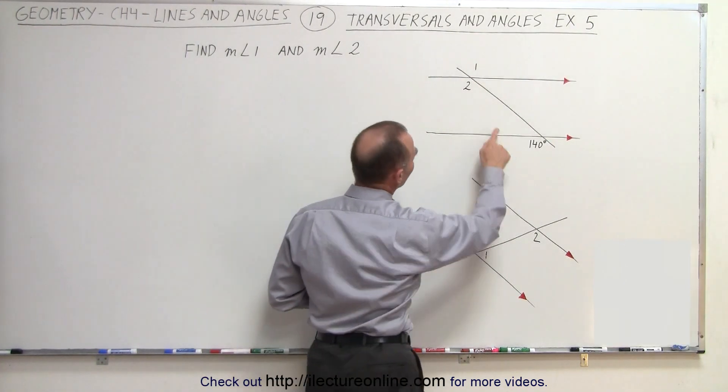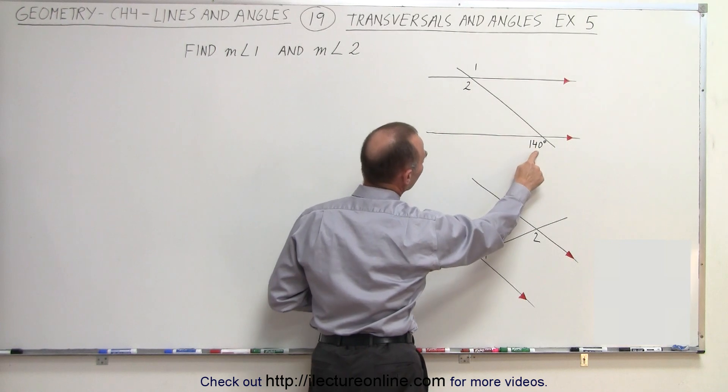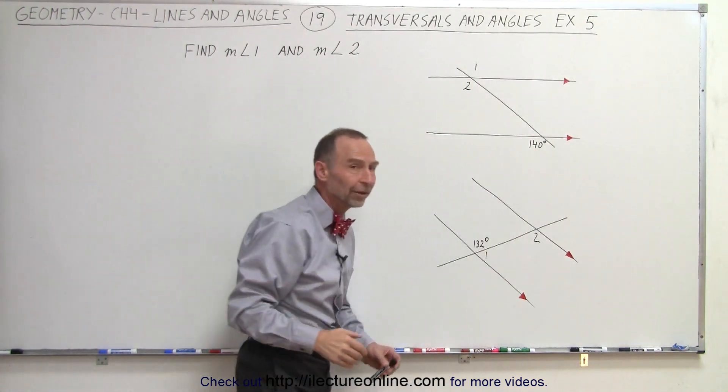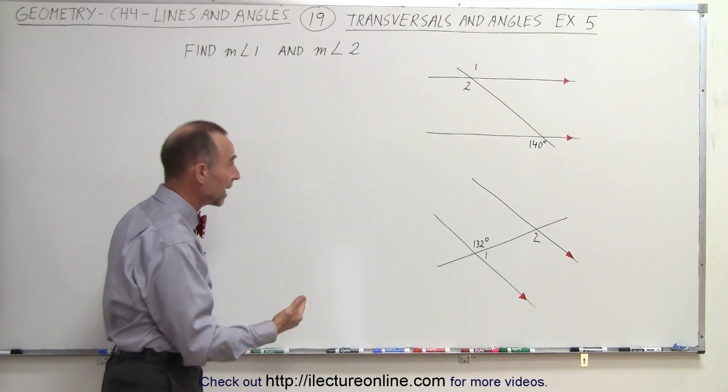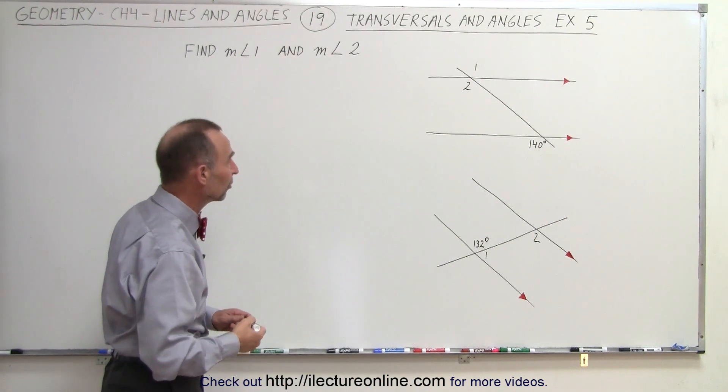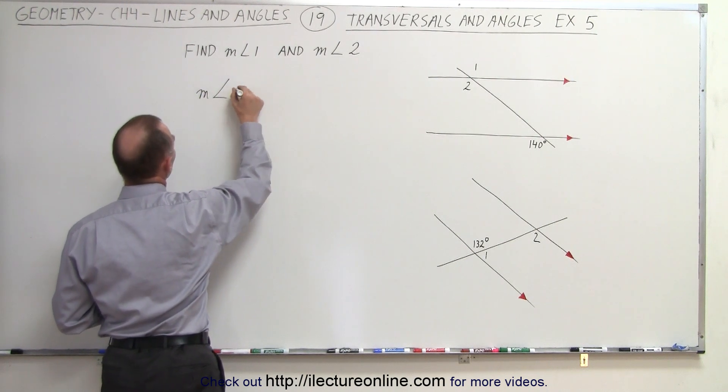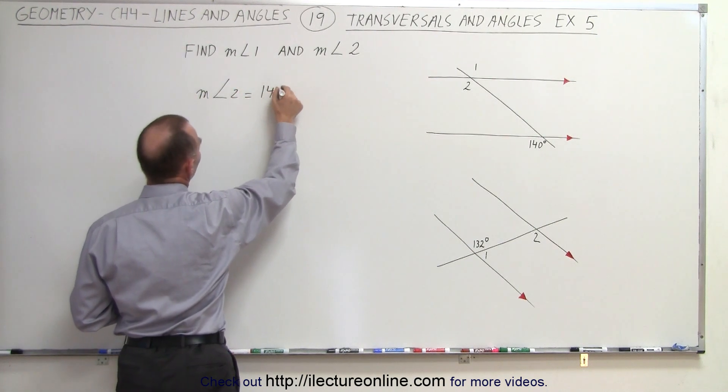Here, notice that angle 2 and 140 degrees, these two angles are what we call corresponding angles. And by the postulate of corresponding angles, we know that their measures must be the same. Therefore, we can claim that the measure of angle 2 equals 140 degrees.